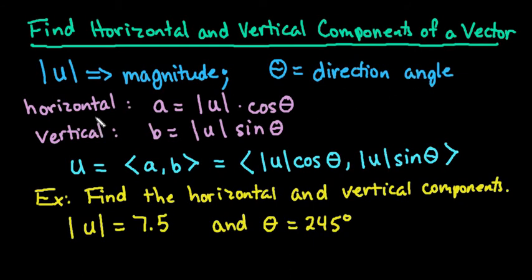To find the horizontal component, all we have to do is a equals the magnitude times cosine of your direction angle, and the vertical is equal to the magnitude times the sine of your direction angle. So u equals <a,b> equals <|u|cosθ, |u|sinθ>, and that's what we're finding.